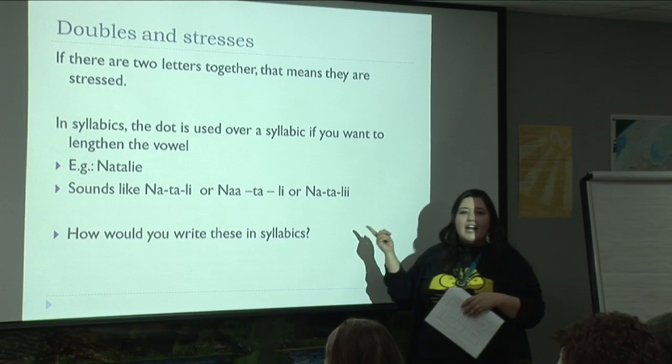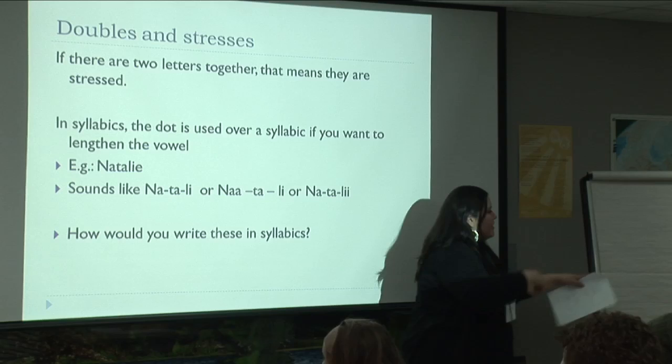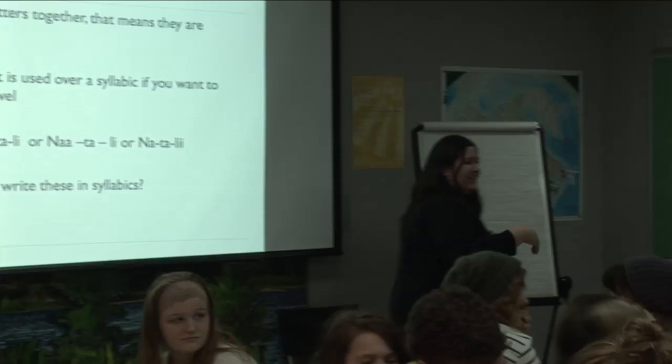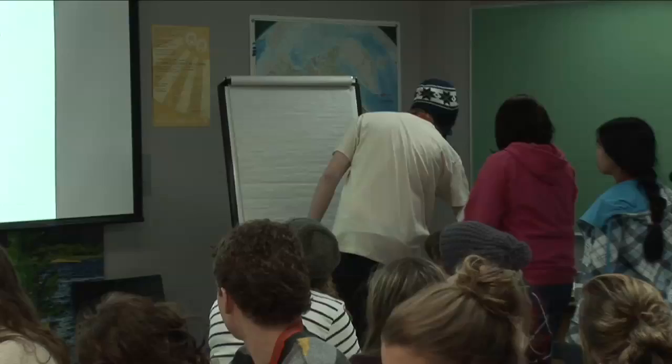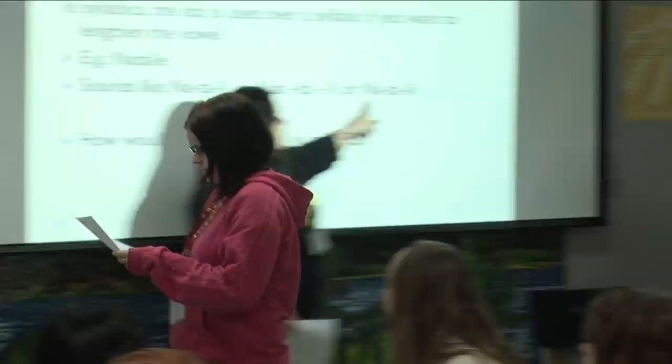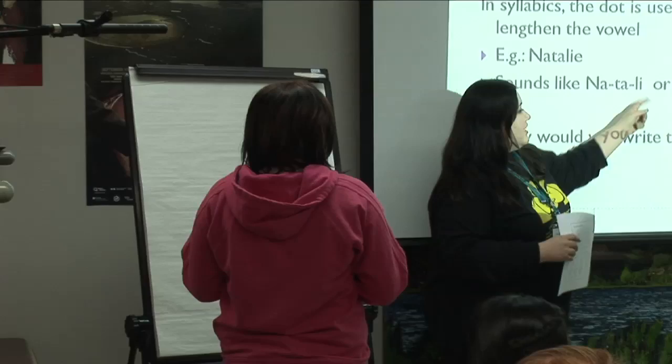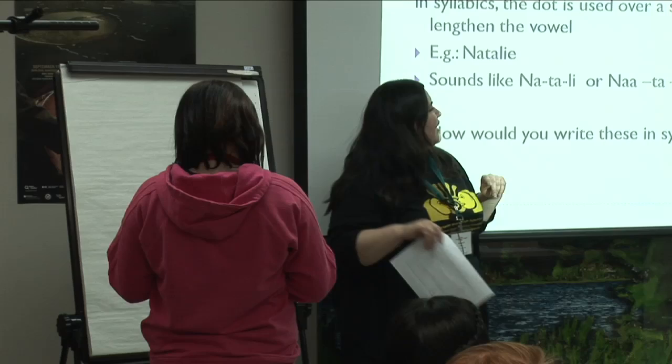Can I have three volunteers? Keegan, I want you to try writing in syllabics this version. And Tara Lee, can you write over here and try to write Natalie? Try writing in syllabics the Na, Ta, Li — the three syllables. Remember to use the dot if you have to. The dot goes over the vowel — so you put that over the Li, or the Na.